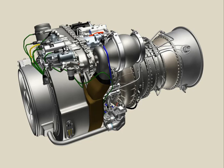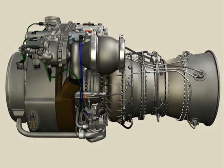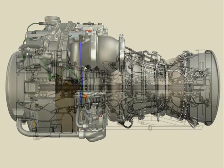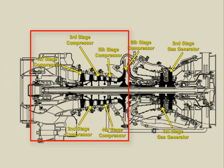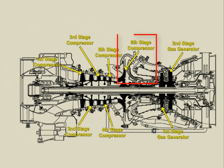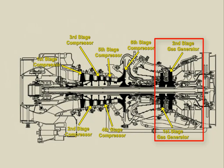The engine incorporates a modular design that minimizes the time required to perform maintenance on individual modules or module subsystems and components. The single-spool gas generator section consists of a five-stage axial, single-stage centrifugal compressor, and a two-stage high-pressure turbine. The high-pressure turbine drives the compressor, and the single-spool gas generator rotates clockwise as a single rotating group on a common shaft.